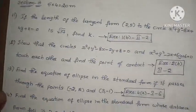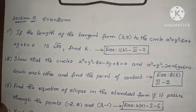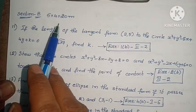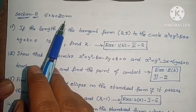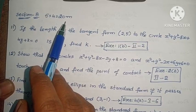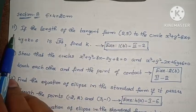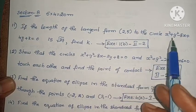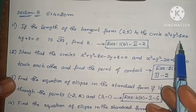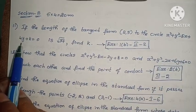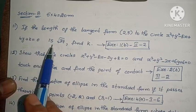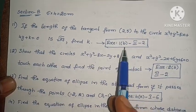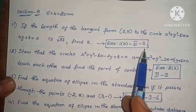Next, Section B. Here 7 problems are given, answer 5 problems, 4 marks each, so total 20 marks. 11th question: if the length of the tangent from (2, 5) to the circle x² + y² - 5x + 4y + k = 0 is √37, find k. This is question 1B, second exercise, second problem.